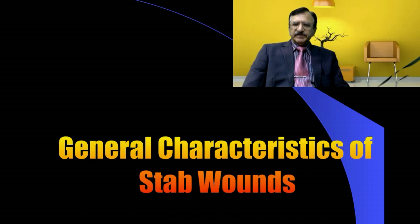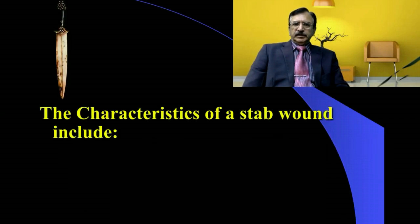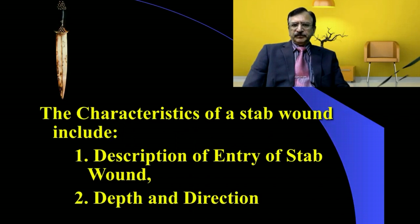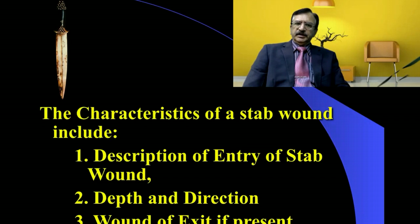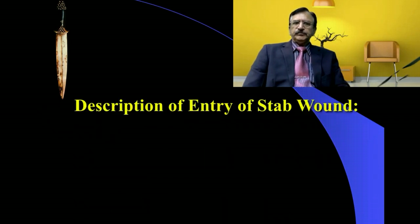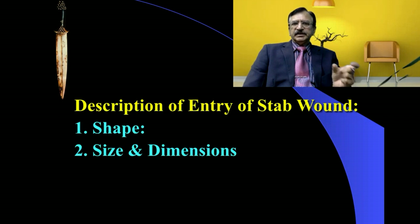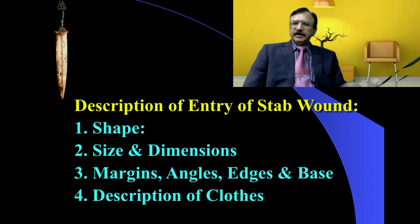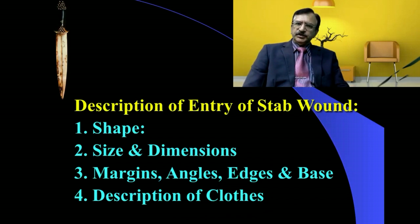Regarding the general characteristics of stab wounds, we describe the entry of the stab wound, which is the most important element. Then its depth and direction, and the wound of exit if any. In the description of a stab wound, we describe its shape, size and dimensions, margins, angles, edges, and base — that is the depth — and also a description of the clothes, that is whether the cuts on the clothes correspond to the wound.